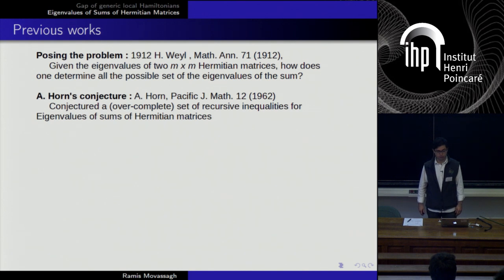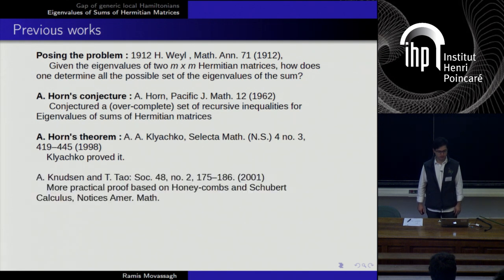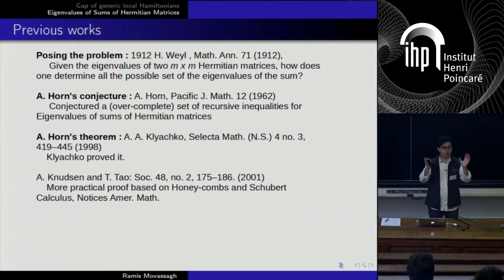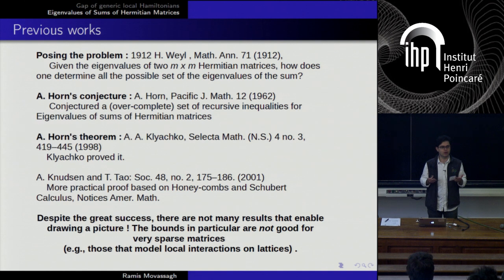Despite the great success, there are not many results that enable you to draw a picture on a computer. A physicist wants to know if you have a singularity, if it's decaying in the tail, if it has a bump in the middle — you want an accurate picture of the density of the sum. So I want to make the problem crisp. Suppose we have two self-adjoint matrices M1 and M2, and find the eigenvalues of M1 plus M2. M1 can be eigenvalue-decomposed: these are eigenvectors and A is a diagonal matrix of eigenvalues. Similarly for M2. You can change basis making A diagonal, in which case Q will be Q_b times Q_a inverse. So the problem reduces to a diagonal matrix plus a conjugation of another diagonal matrix by an eigenvector matrix.